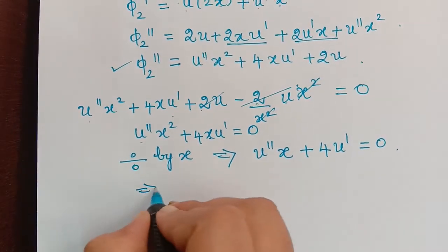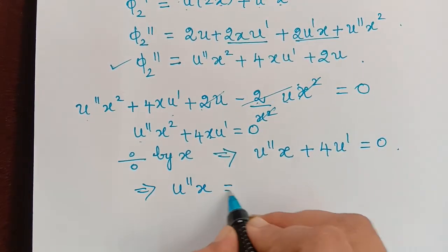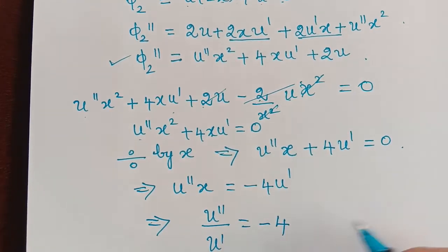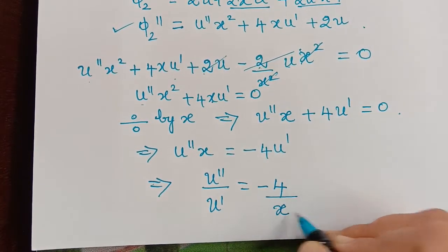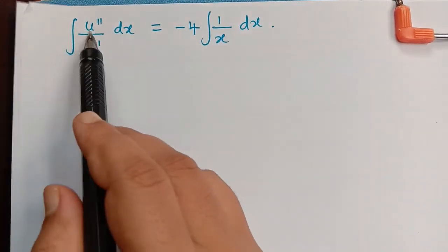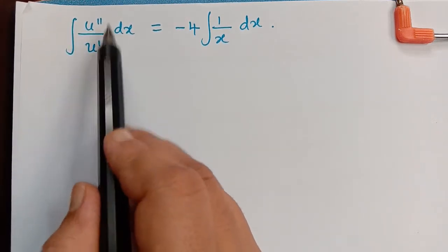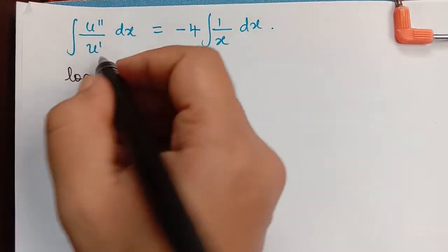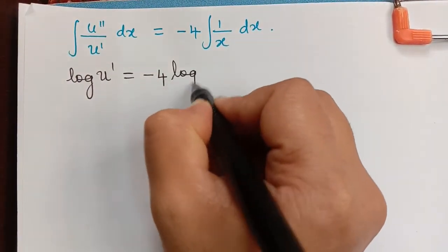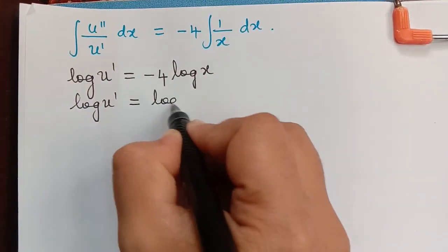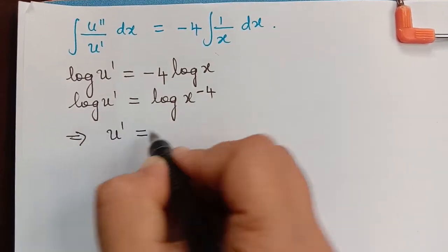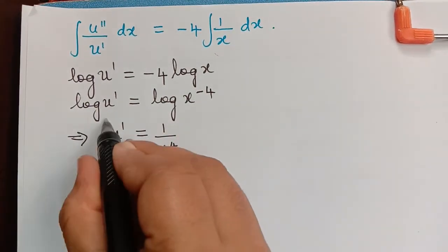Rewriting: u''x = -4u'. Bringing u' to the left: u''/u' = -4/x. Integrating both sides with respect to x — since u'' is the derivative of u', the left side integrates to log(u') — we get log(u') = -4·log(x) = log(x⁻⁴). Therefore u' = x⁻⁴ = 1/x⁴.